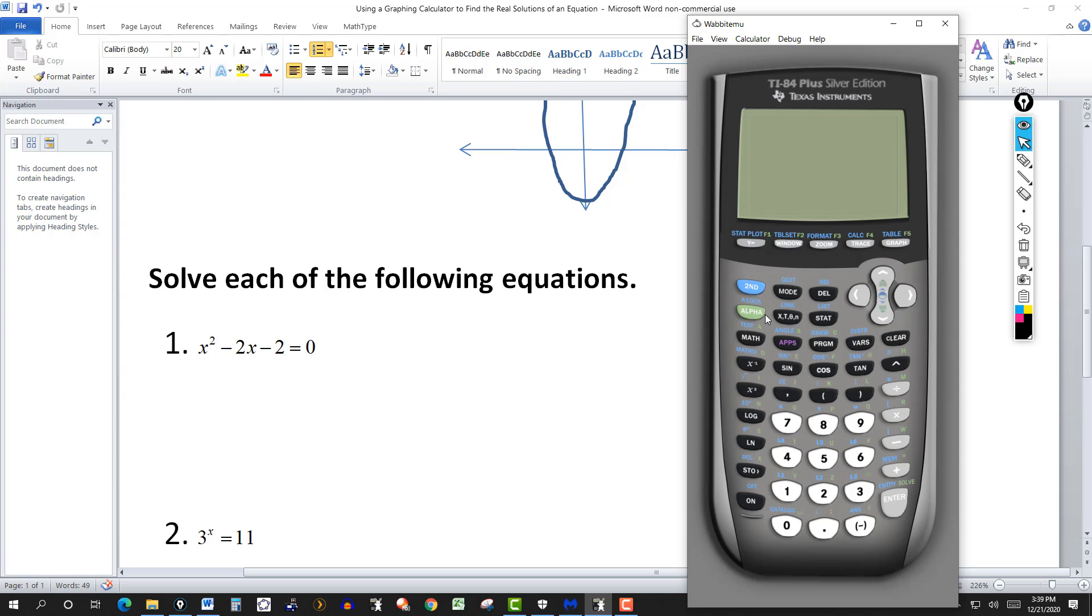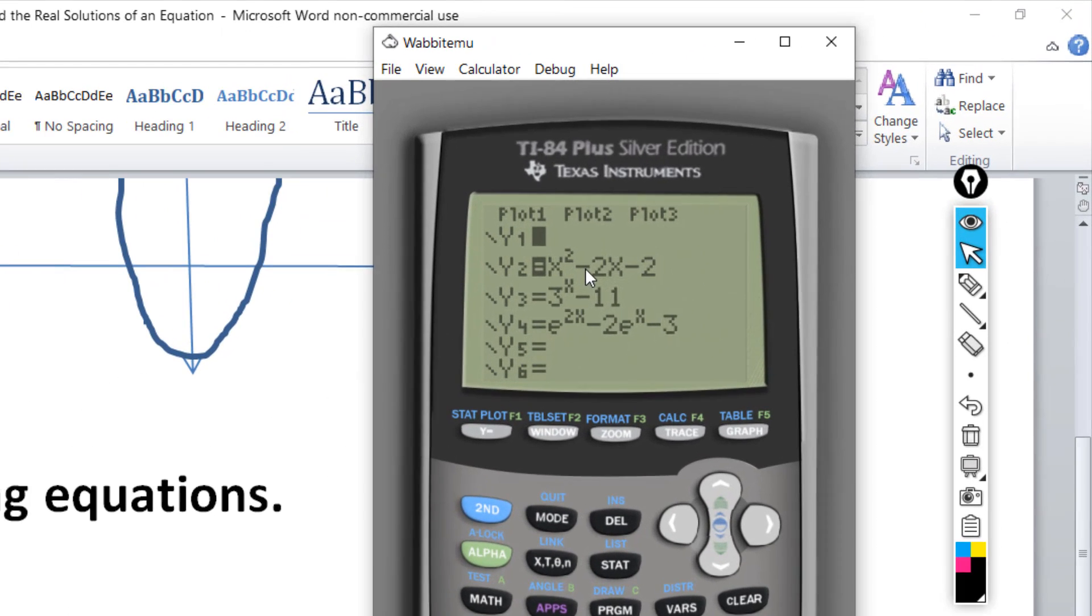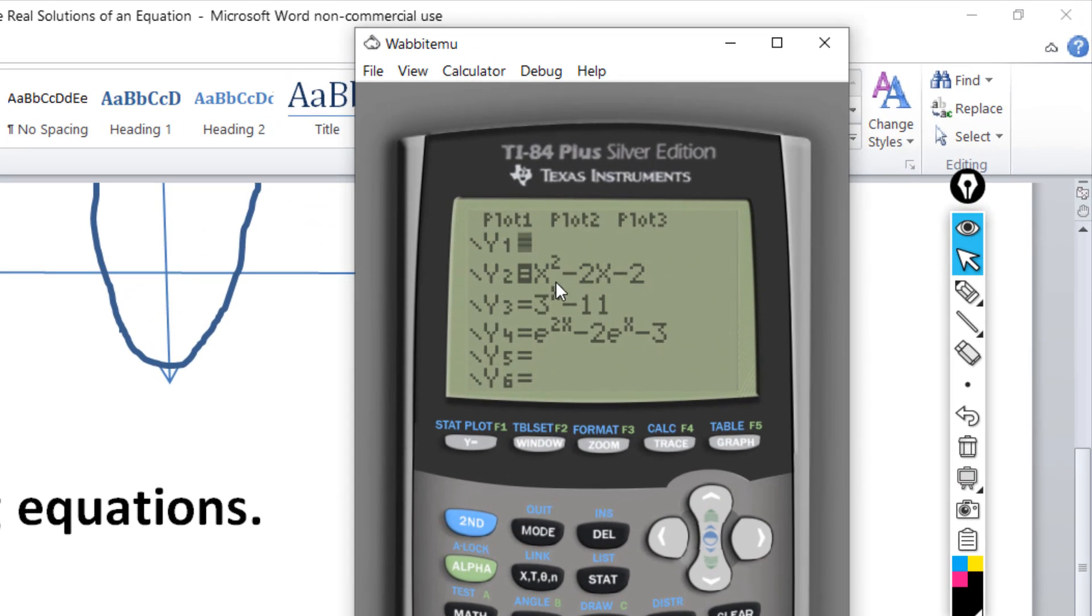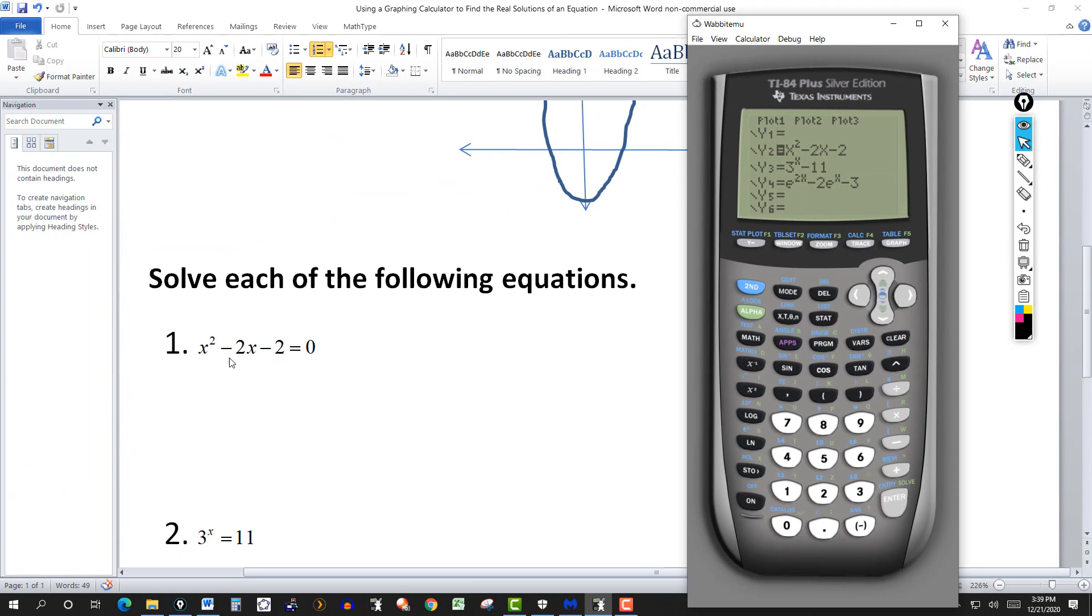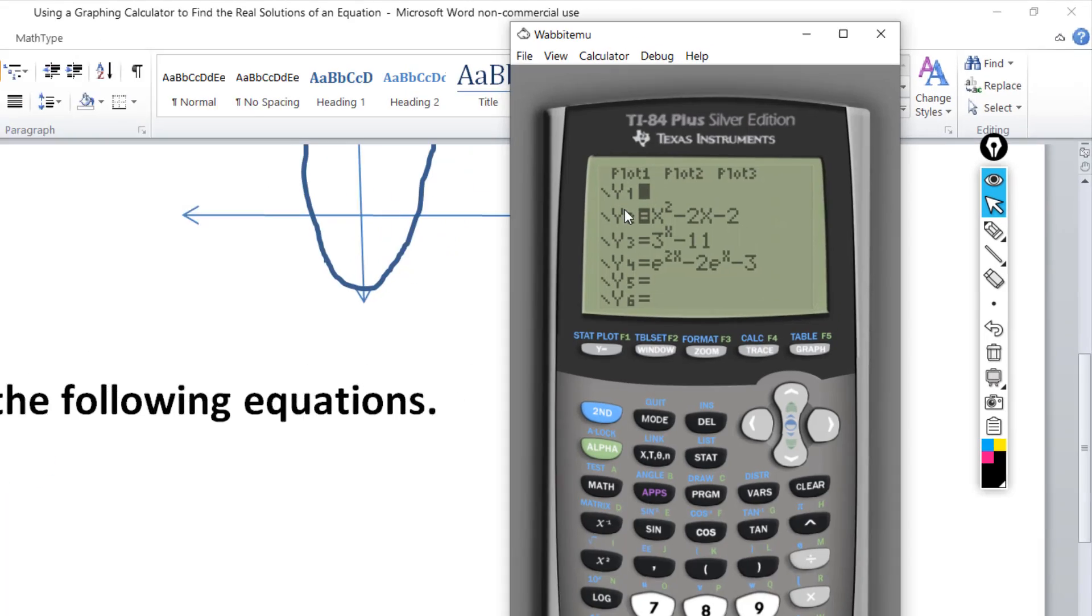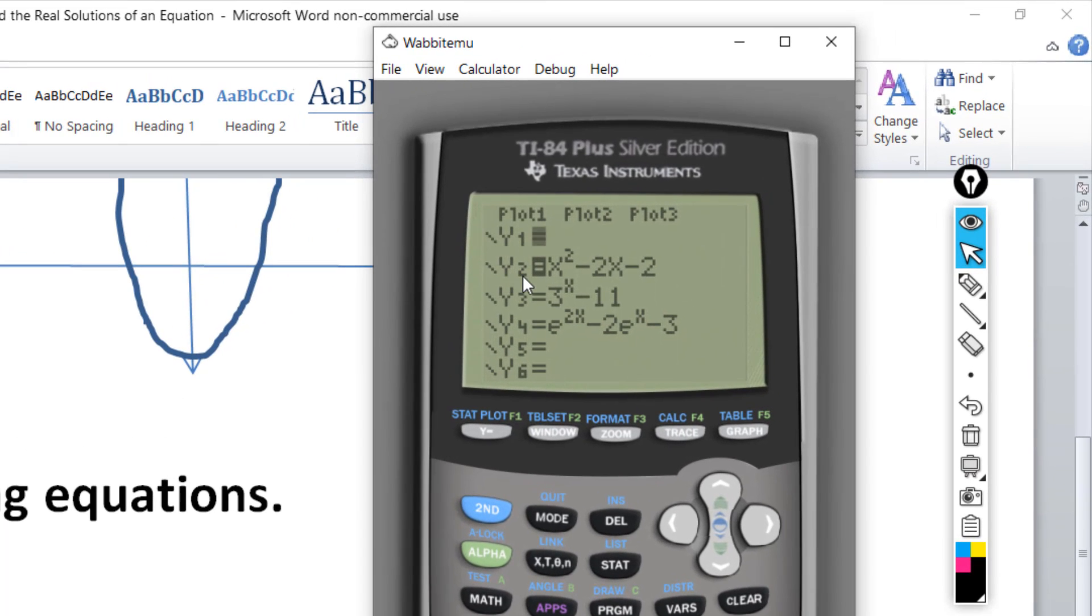Hit the y equals, turn it on first. And I've already entered these functions just to make the video a little bit shorter. So I have this there and right here, this x² - 2x - 2 would be your f(x). It's equal to 0, so we simply have to graph then the y value. In this case, it's y2 equal to x² - 2x - 2. So we graph it, hit the graph.